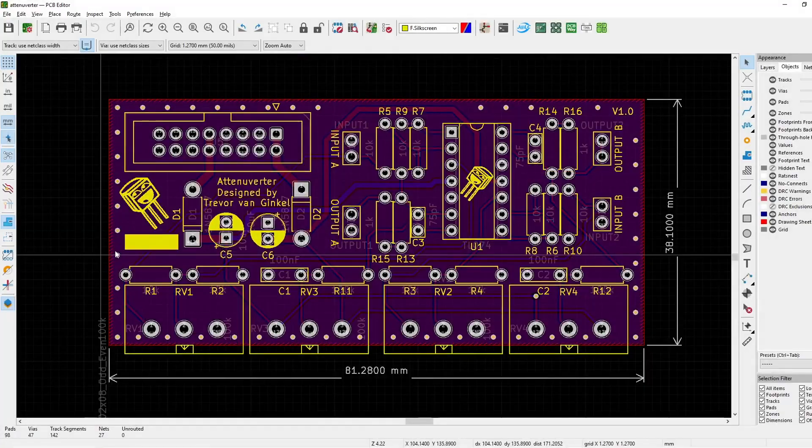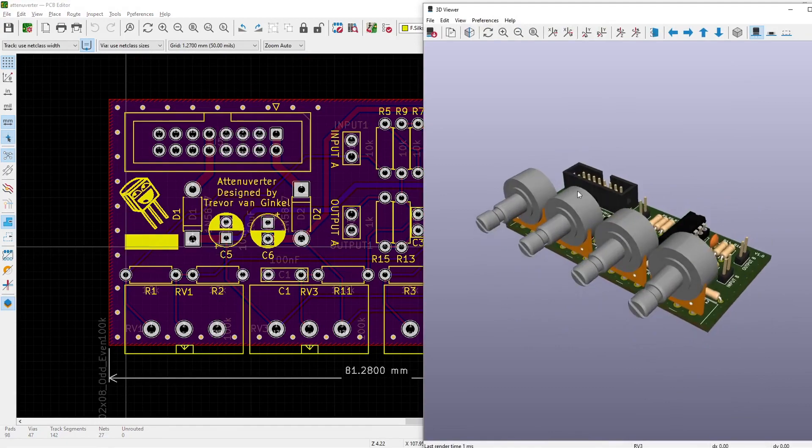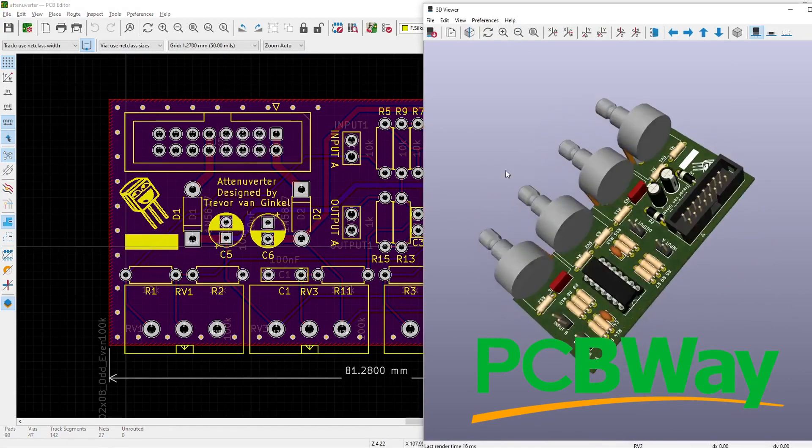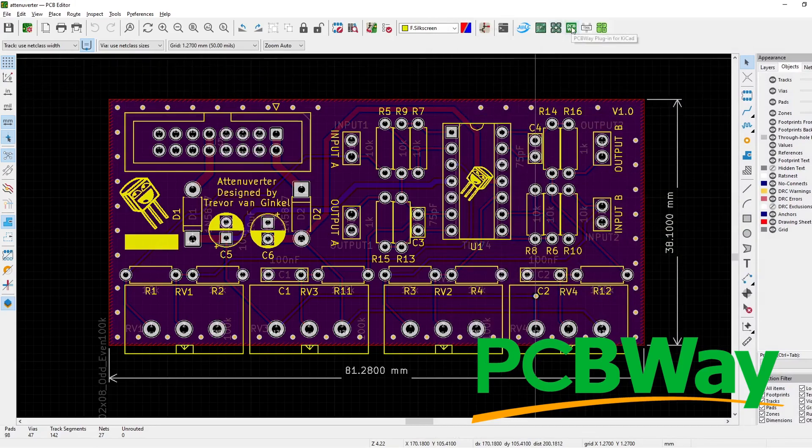I made a two-layer PCB design in KiCAD for a dual attenuverter with gain and offset. The PCBWay plugin makes it easy to upload your design to their website and immediately get a quote on your board.